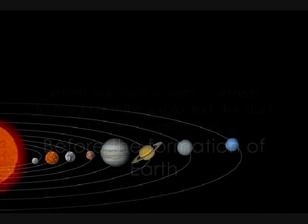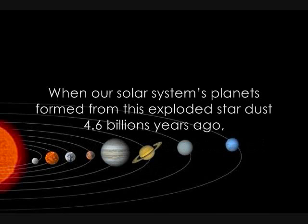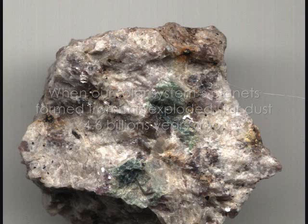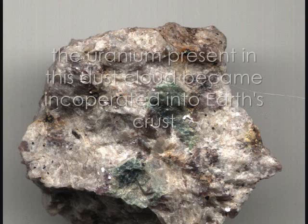This event occurred over 5 billion years ago, before the formation of Earth. When our solar system's planets formed from this exploded stardust 4.6 billion years ago, the uranium present in this dust cloud became incorporated into Earth's crust.